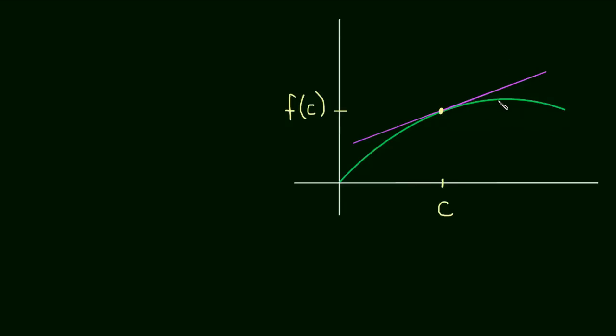In other words, if we wanted to know maybe this height right here, but we couldn't find it for some reason with the function, we could use the tangent line and say this is approximately the height of the function. Obviously they're off by some small amount.